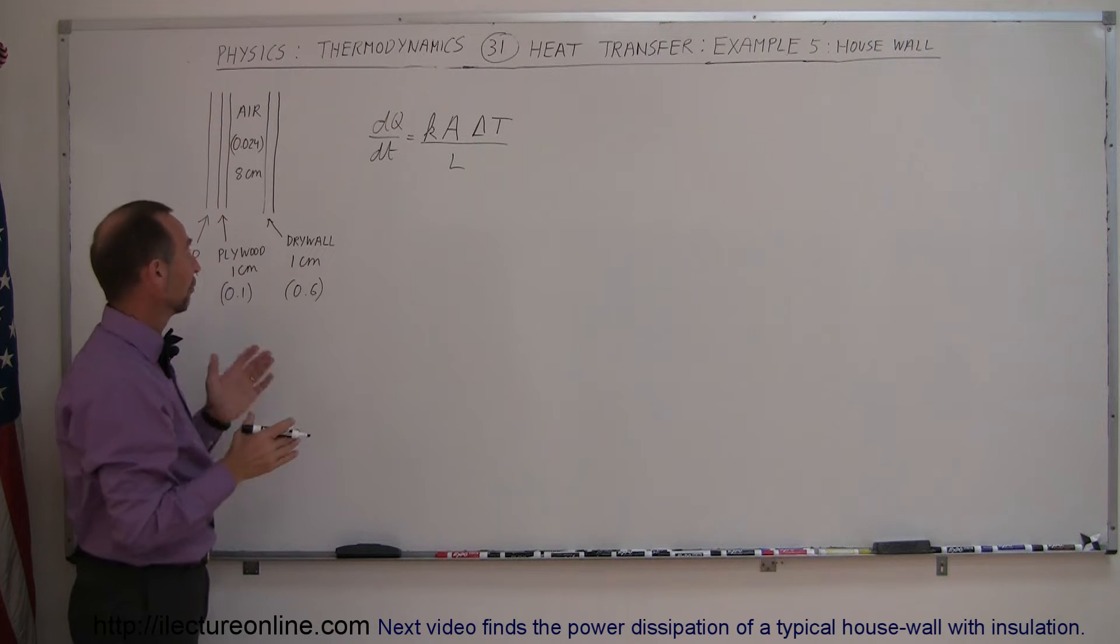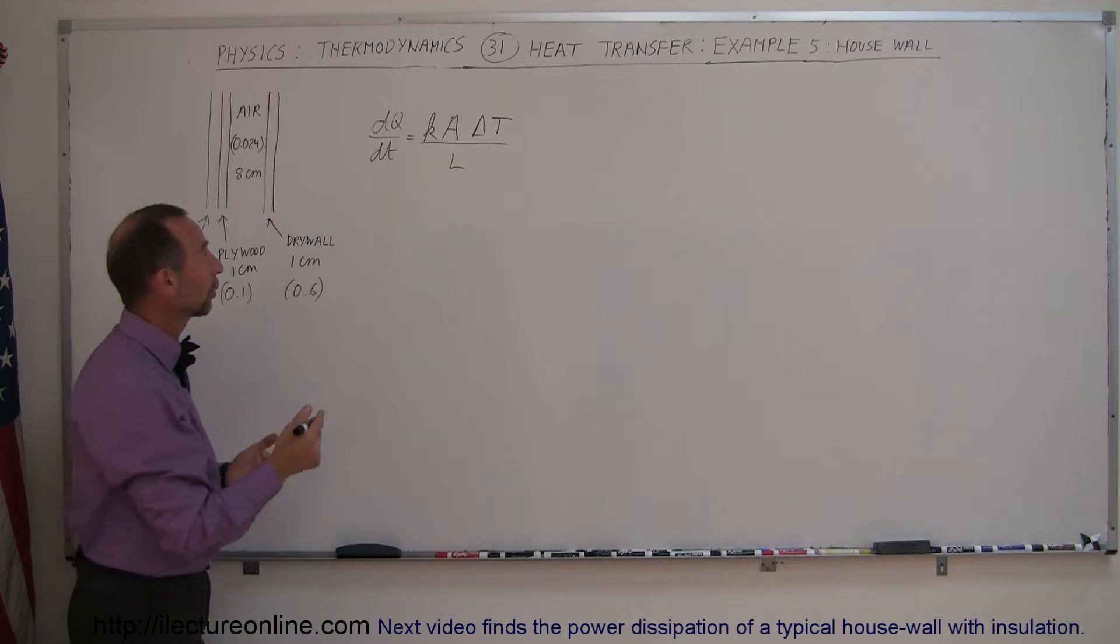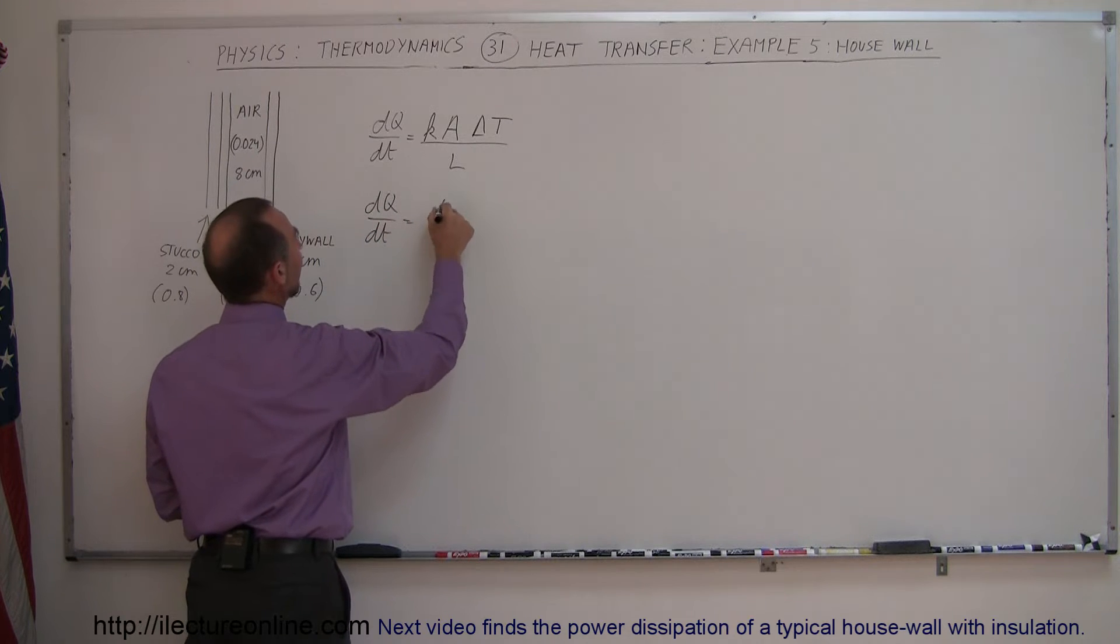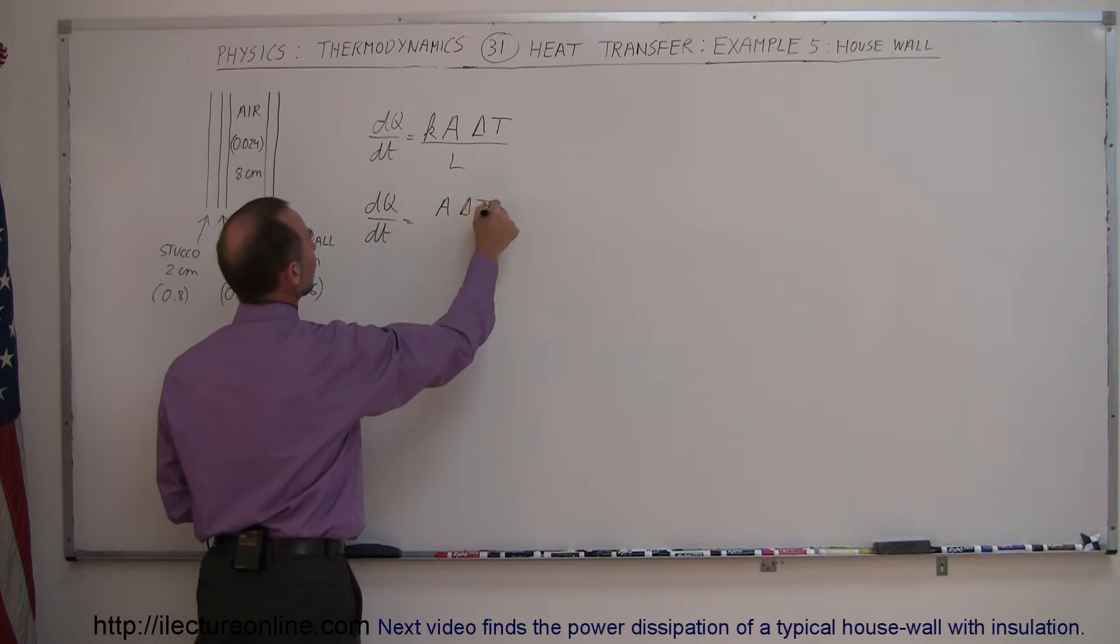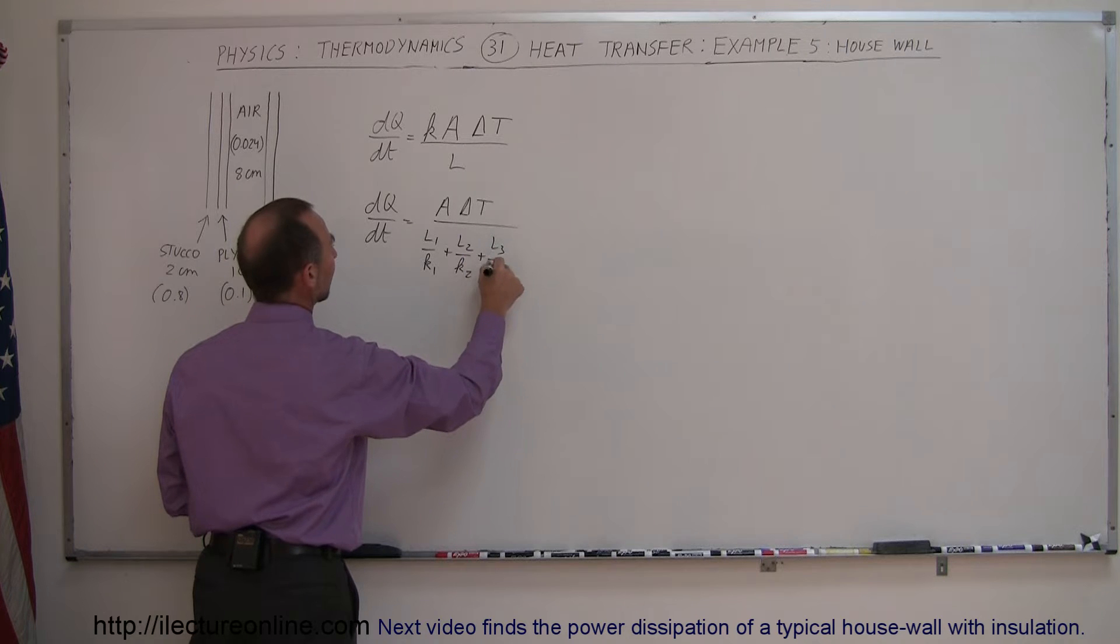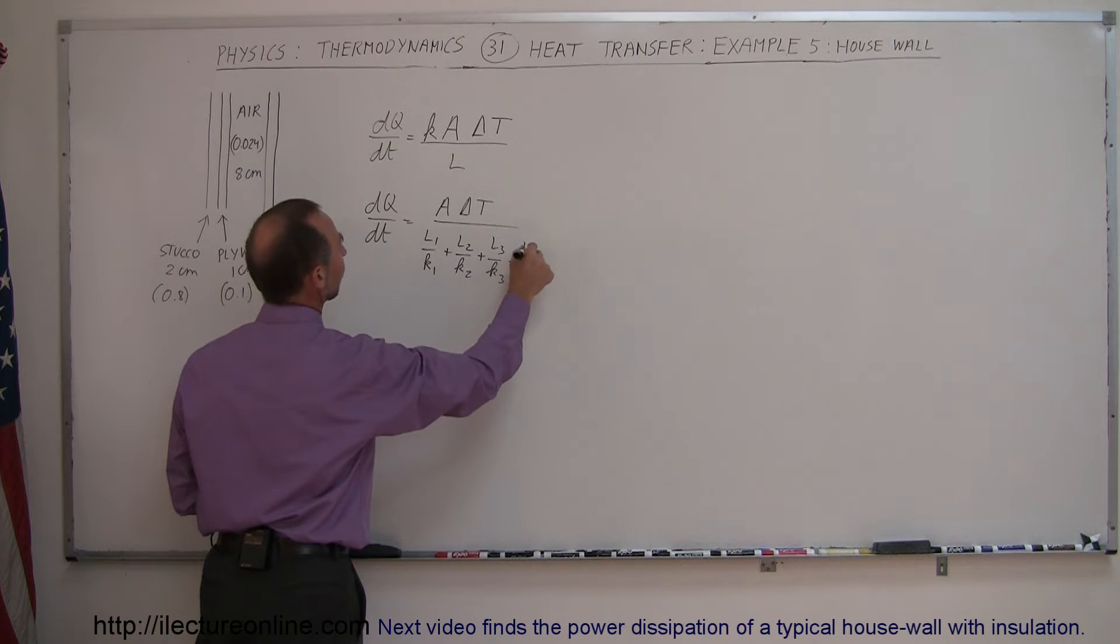And again, since there are four different materials, four different layers, we're going to say in this case that the dQ/dt is equal to A times the difference in the temperature divided by L1 over K1 plus L2 over K2 plus L3 over K3 plus L4 over K4.